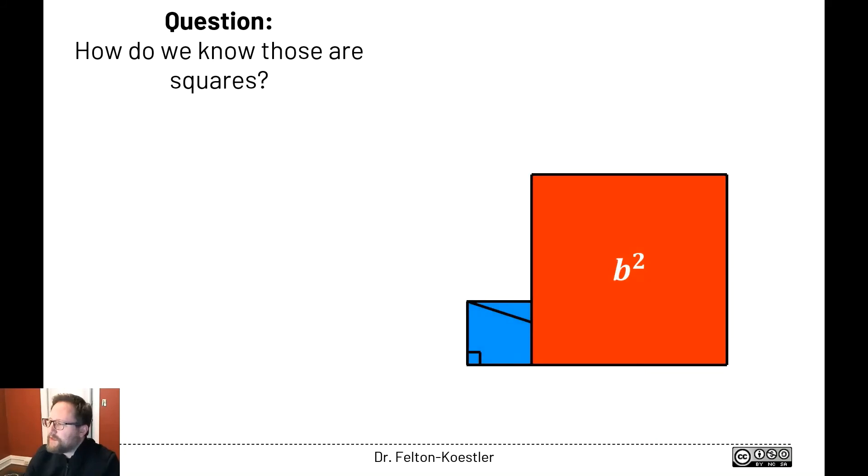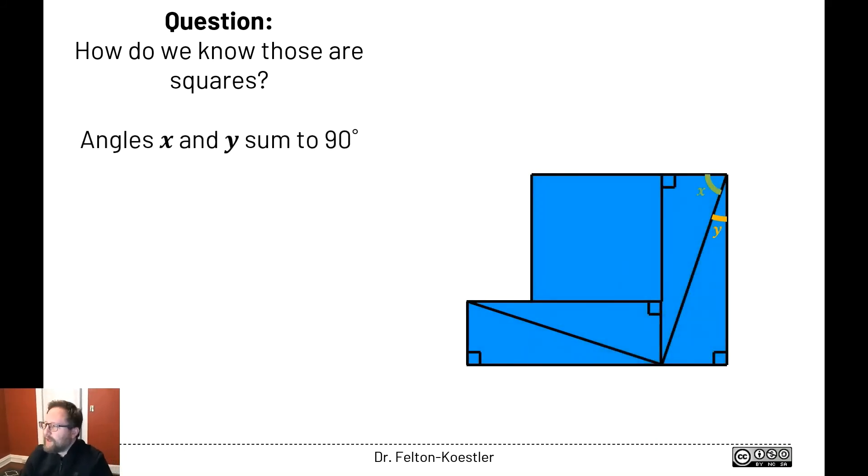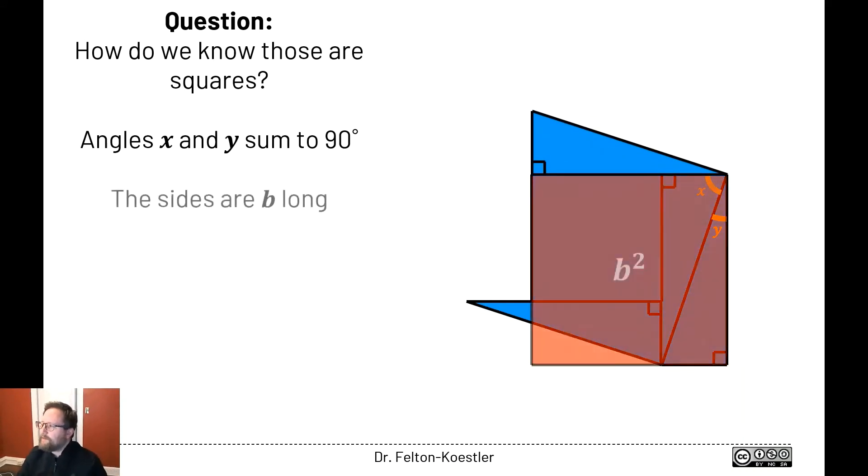A similar argument works for this one. Again, we have a right angle in the corner because we brought two right triangles together. As a reminder, the sides are in fact b because this piece used to be here, and so we end up with b squared.